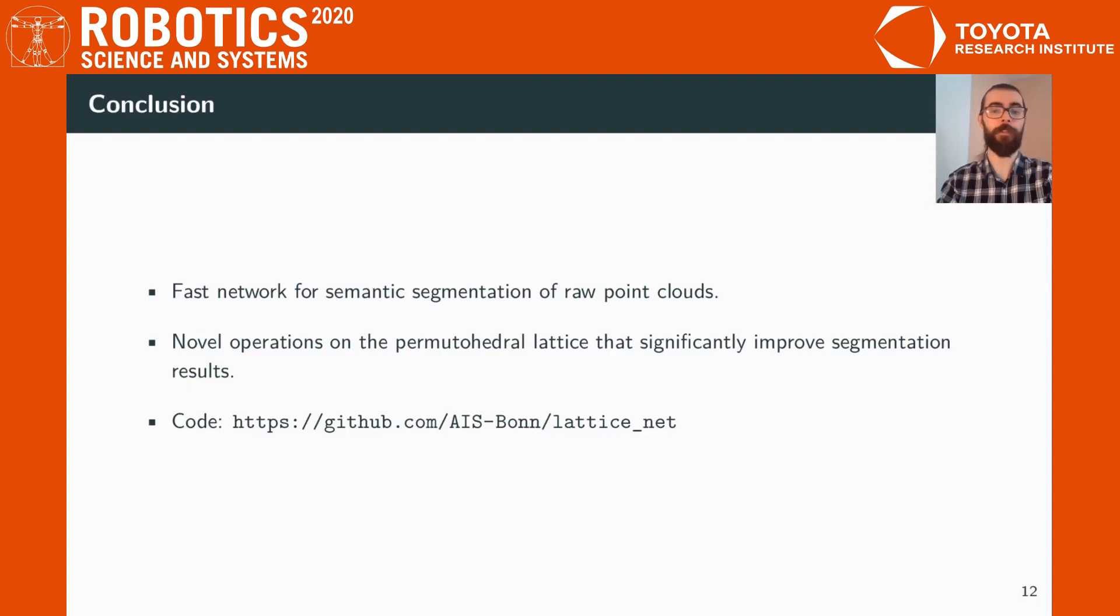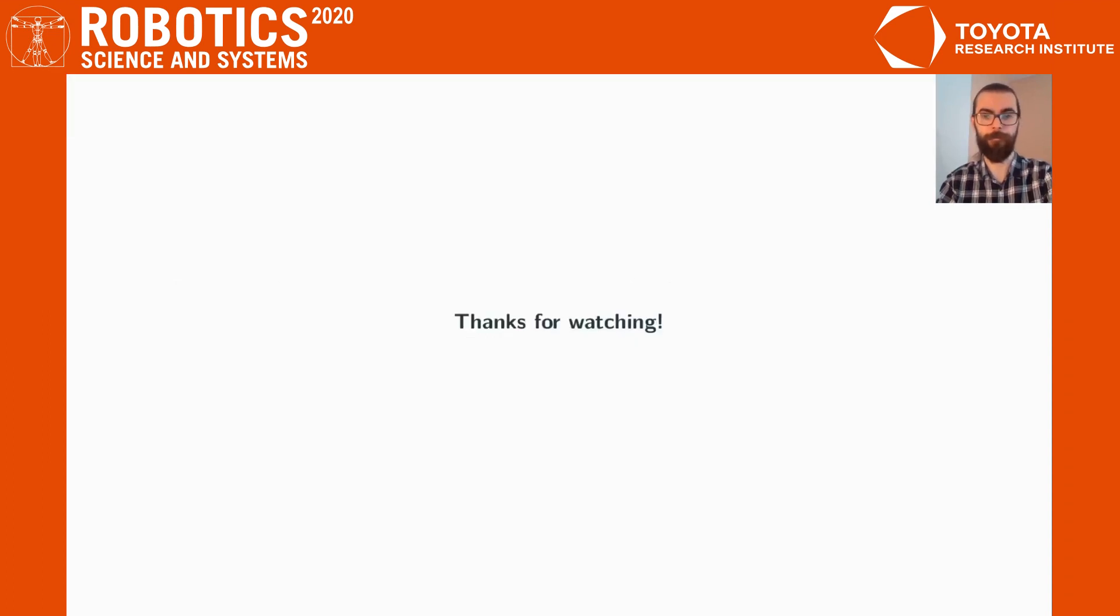We propose a fast network for semantic segmentation of raw point clouds and we define novel operations on a permutohedral lattice that significantly improves the segmentation results. We also make the code available for everyone to try. Thank you for watching.